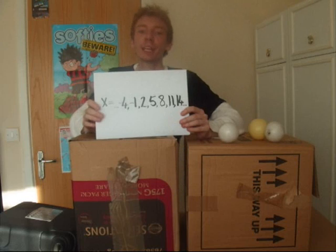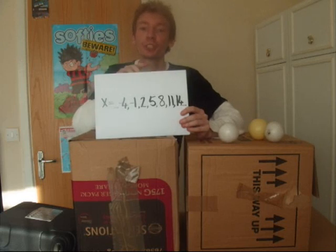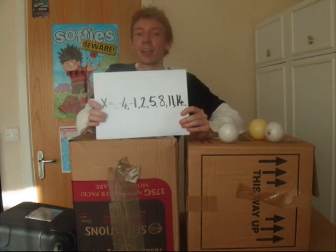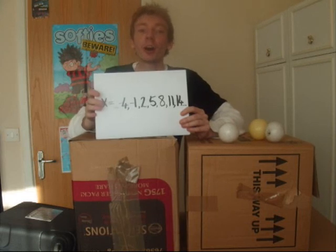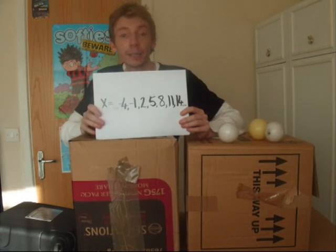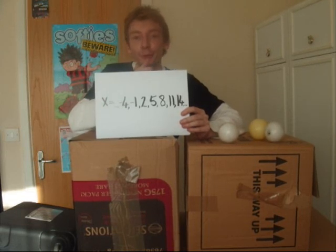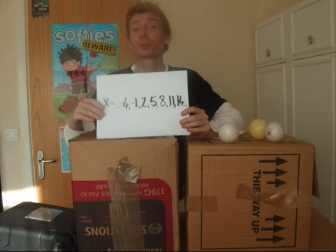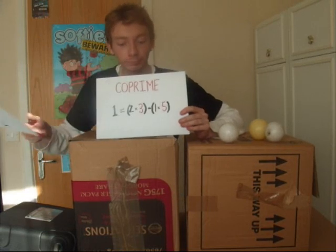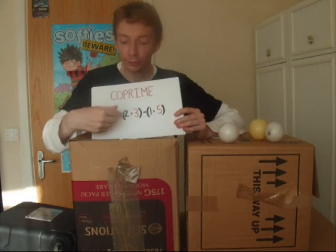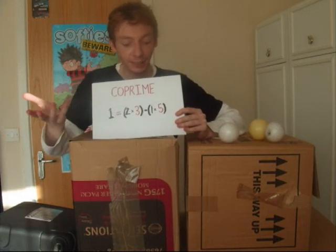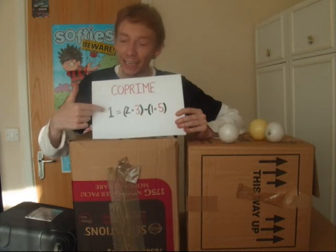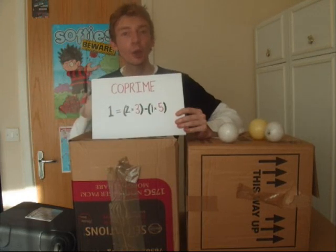The Chinese remainder theorem tells us which numbers fit both equations. Let us solve this first. This only works if the two piles are coprime. This means I can add and subtract copies of three and five to make the number one. So, something like this — you see here, I've got two times three, that's six, take away one times five, and that gives us the number one. So, they are coprime.